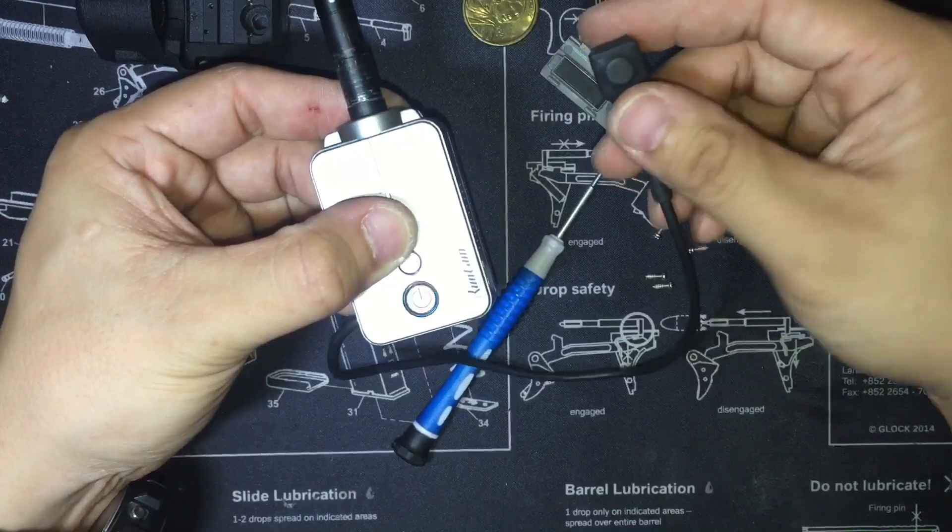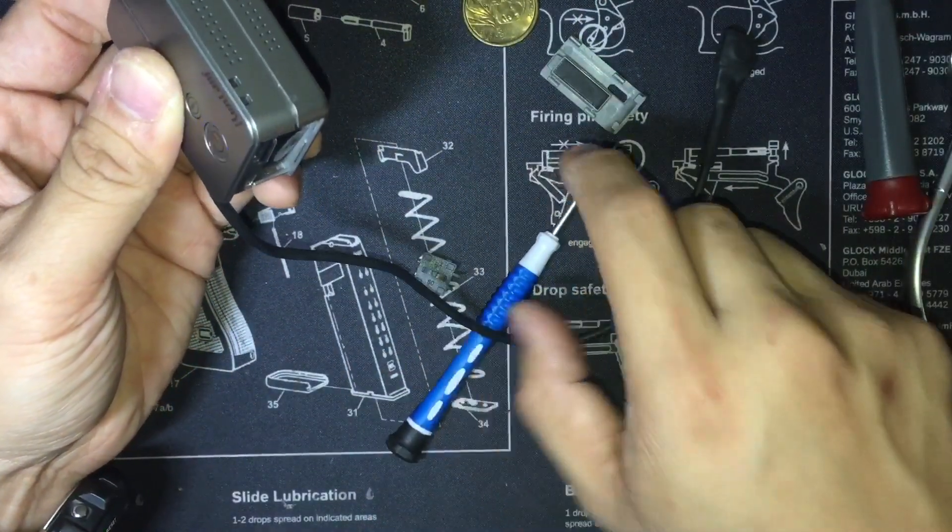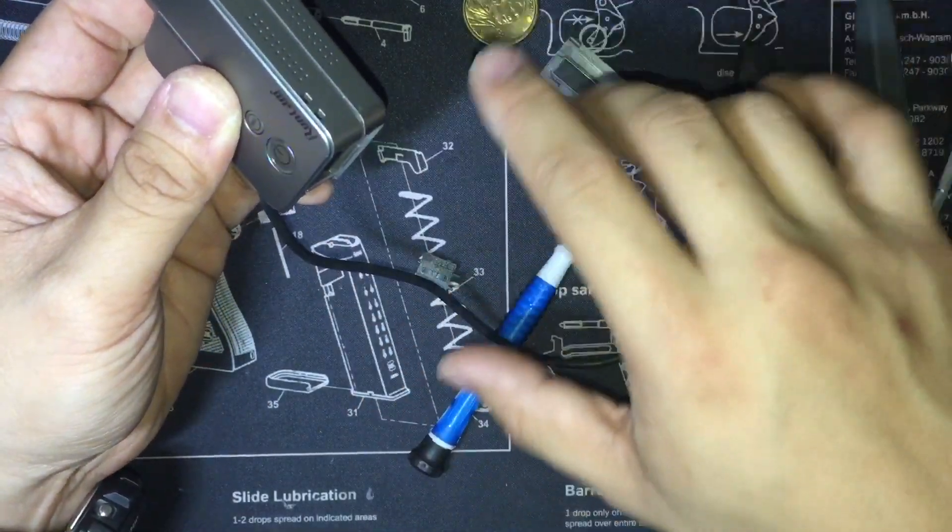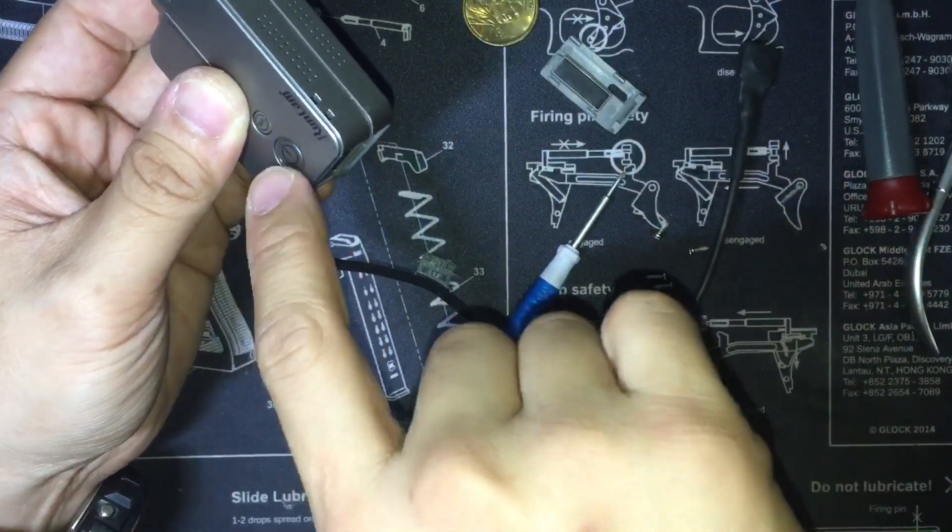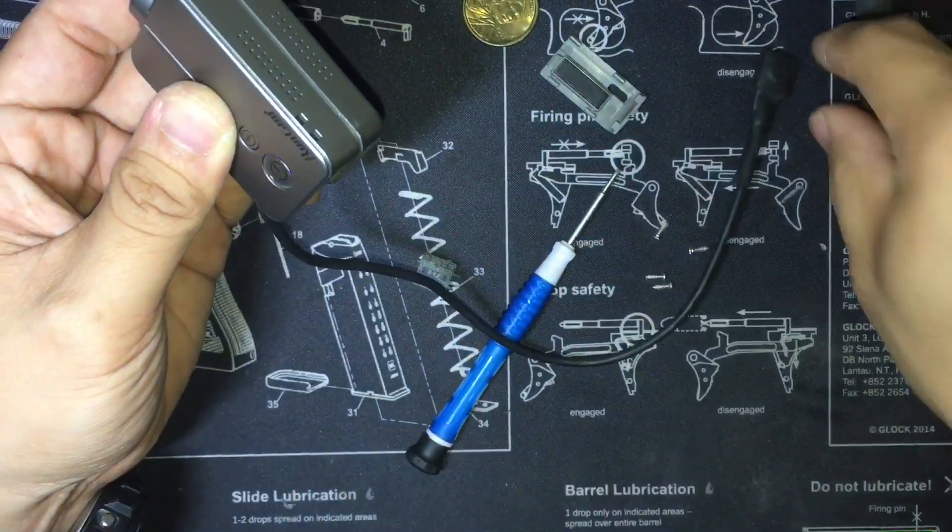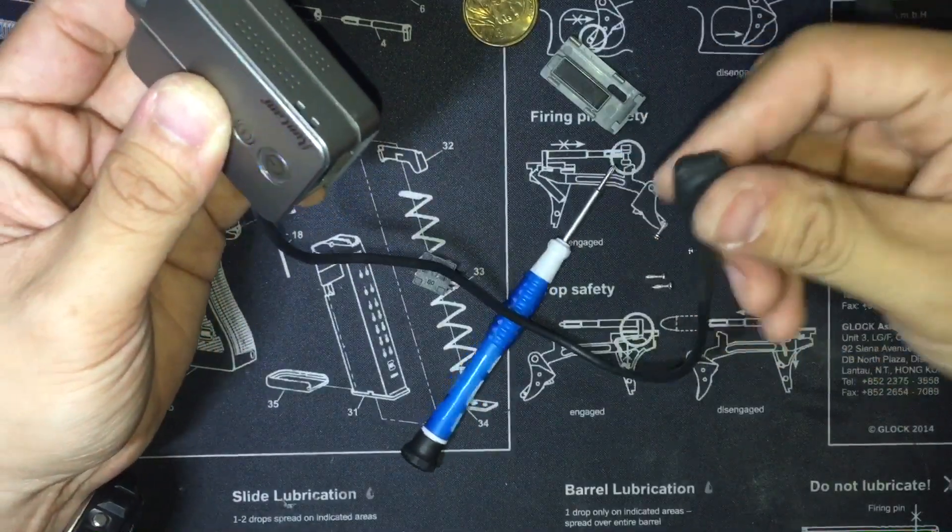And that beats holding your rifle, reaching, taking your hand off of your trigger hand off of the gun and having to go all the way up here to push the button and then come back down. So now I can just operate it with my thumb.